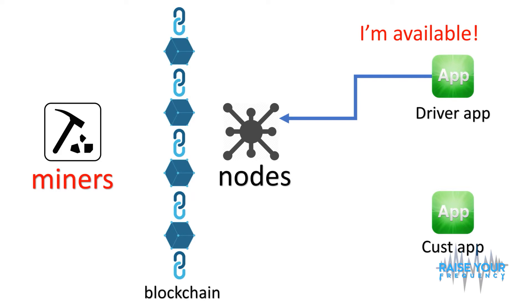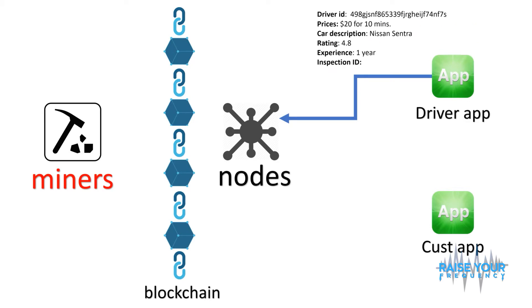The way it works: the driver opens his app and declares that he is available. When he does that, the app sends information to the nodes — the driver ID, which is digitally signed. These are all examples or possibilities. You could have the price he charges, the car description, and — this is fundamental — his rating system and maybe his experience, how long the driver has been doing it.